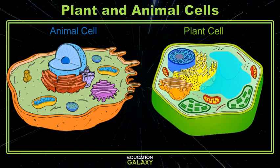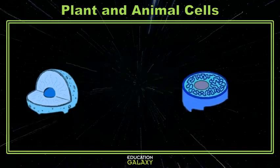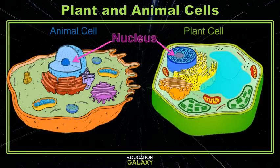Plant and animal cells have a lot in common. Both have a nucleus, or a control center. This is where the organism's DNA is stored, and where the blueprints for that organism are kept. The nucleus is usually sphere shaped, and looks a lot like a dark spot when viewed through a microscope.